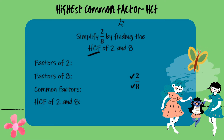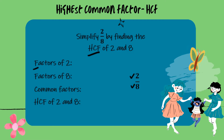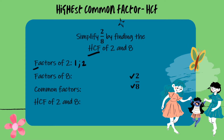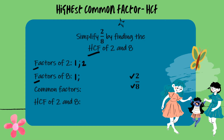Factors are those numbers that fit into a number exactly. For example, when I divide 2 by 1 and by 2 there are no remainders. Let's quickly find the factors of 8 as well. The factors of 8 are 1, 2, 4 and 8.